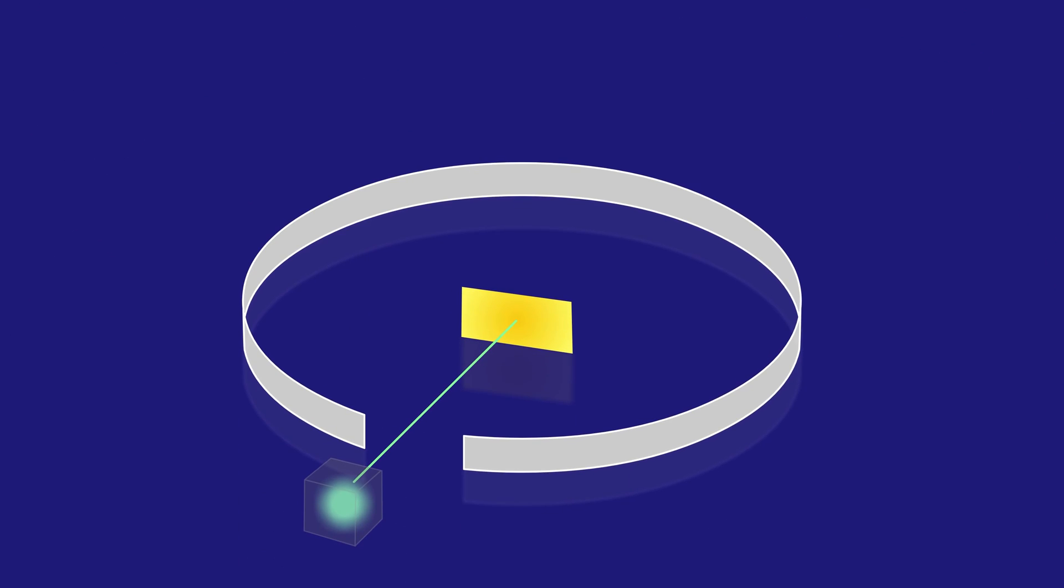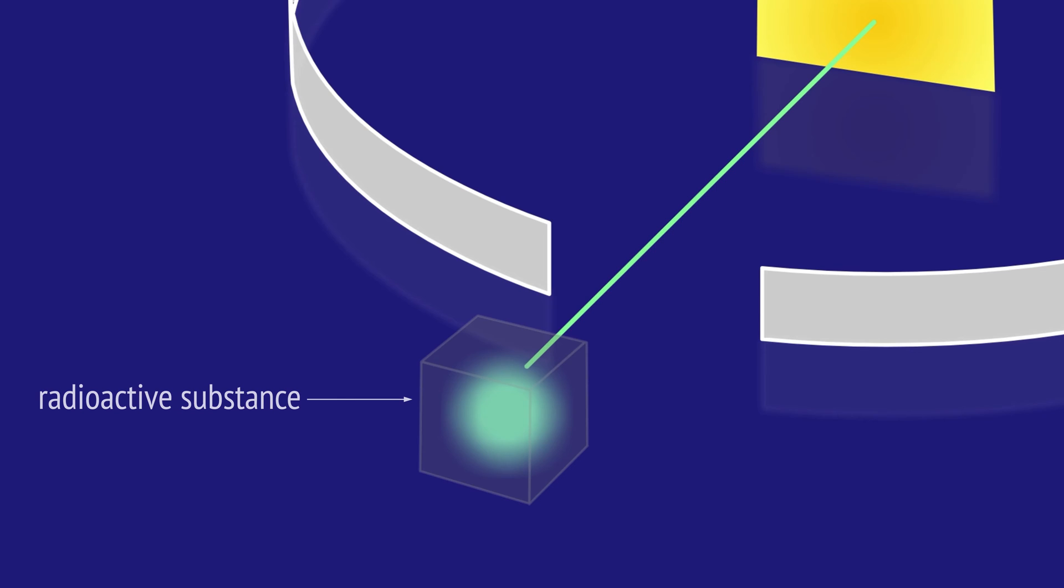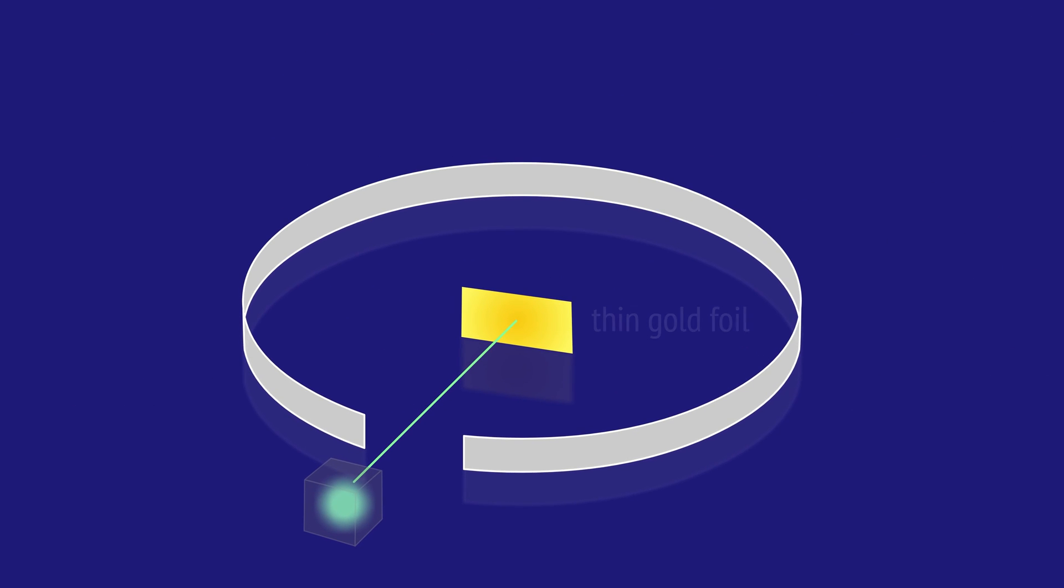Rutherford's famous gold foil experiment forever changed what we knew about the atom. Using a radioactive source, he fired a beam of positively charged alpha particles at a very thin piece of gold foil. A luminescent screen was placed around the foil to detect any deflected alpha particles.